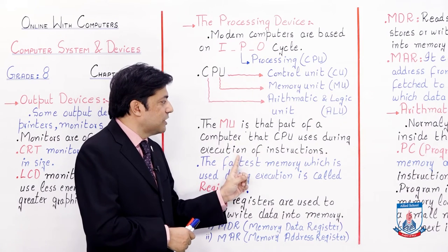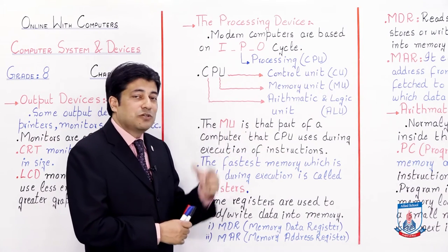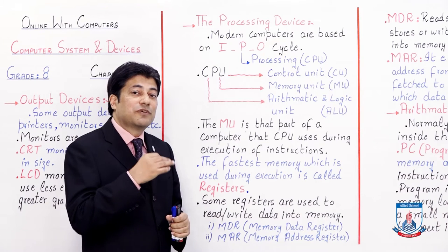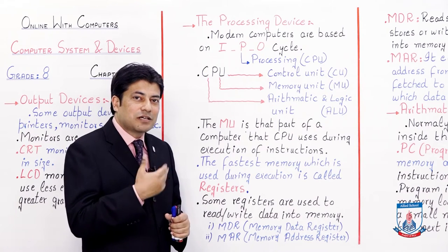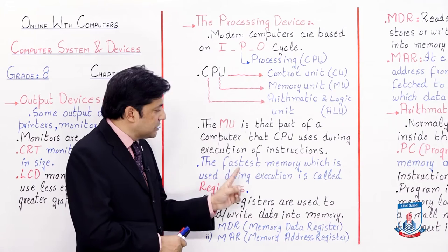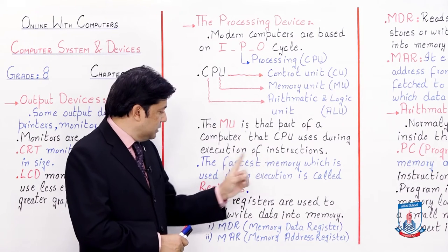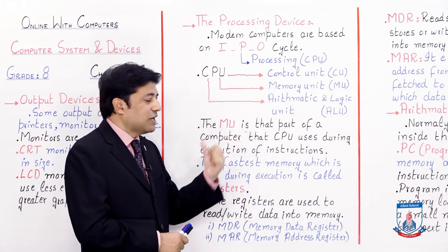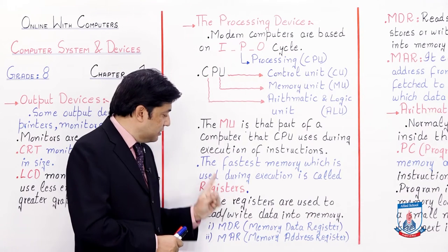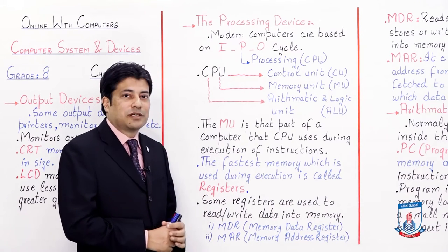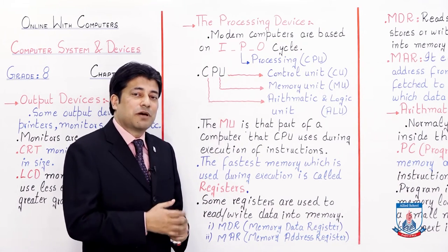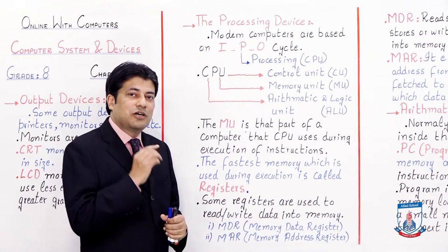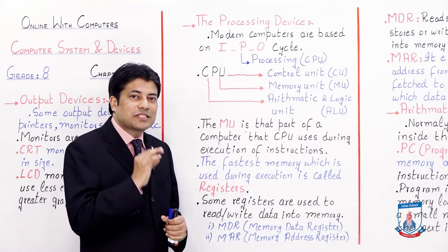The instructions that have been executed will be stored in this memory unit, so CPU can perform tasks quickly. The fastest memory used during execution is called registers. Registers are the fastest memory, nearer to the CPU, and they reside inside the CPU.